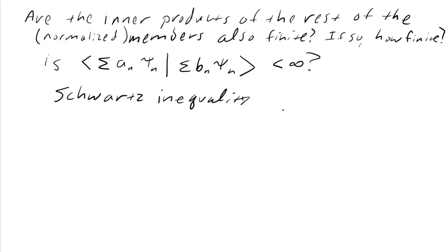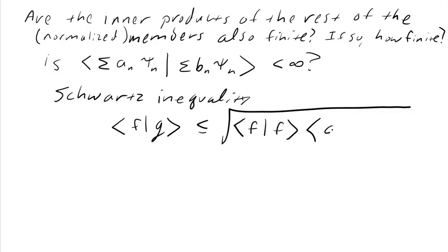The Schwartz inequality says the inner product of two functions f and g is less than or equal to the square root of the product of each function's inner product with itself. So it follows that because you can always take the inner product of a function with itself and not get infinity, that if this is not infinite, then that's not infinite.